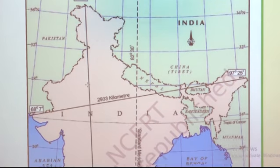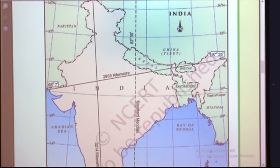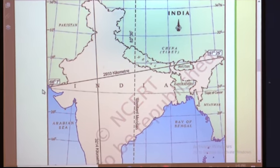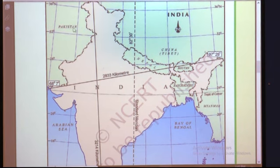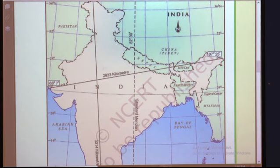Looking at the Indian map, from Gujarat to West Bengal the land boundary is about 15,200 kilometers — covering Pakistan, Afghanistan, China, Nepal, Bhutan, Bangladesh, and Myanmar. And on the southern side, from Gujarat to West Bengal including Andaman, Nicobar, and Lakshadweep, the coastal area is about 7,516 kilometers.